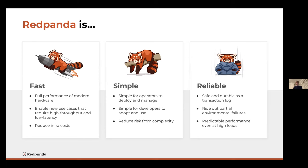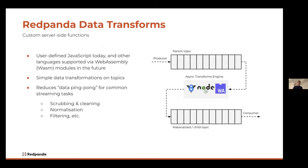This allows Red Panda to deliver very predictable performance, even at very high loads. Now that we know a bit about Red Panda, let's talk about how the data transforms feature uses WebAssembly and relies on server-side functions within the streaming platform itself.